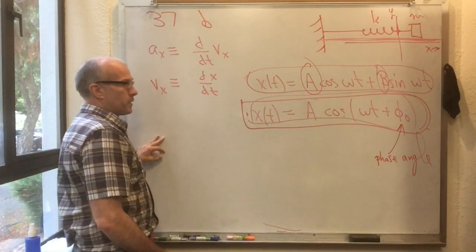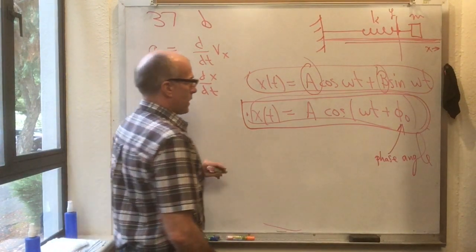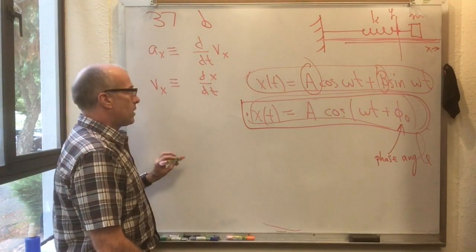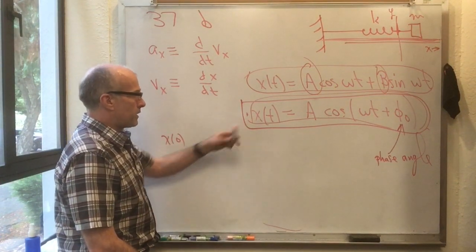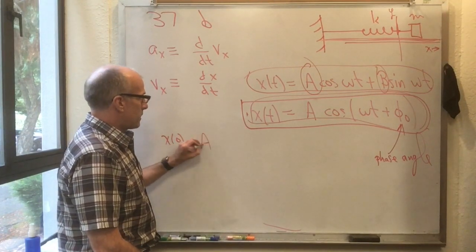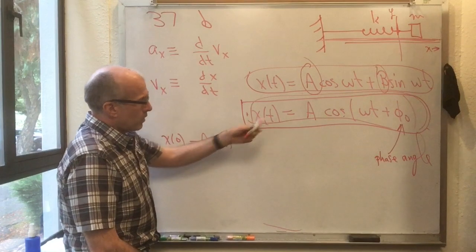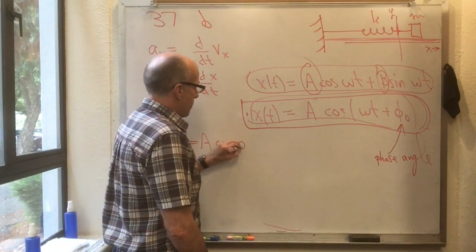Let me just show you one more thing about this before I stop. If I use Knight's form, let's just check something. Let's find out what x of zero is. So at time t equals zero, I plug into this and I get that I get A times the cosine. Well, omega t is zero if t is zero. So I get A cos phi naught.